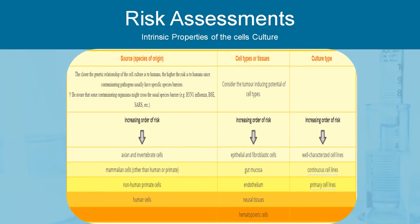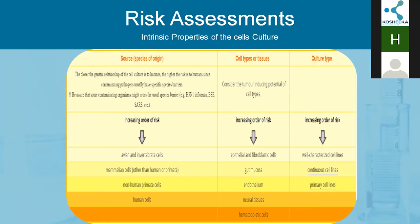The first parameter is the intrinsic properties of the cell culture. What are the intrinsic properties? The source or species of origin. As we all know, the closer the genetic relationship of the cell culture to human, the higher the risk to human. If we are working with pathogens, influenza virus, or cell lines pertaining to SARS or COVID viruses, we should be aware that some contaminating organism might cross the species barrier and can be fatal to us.